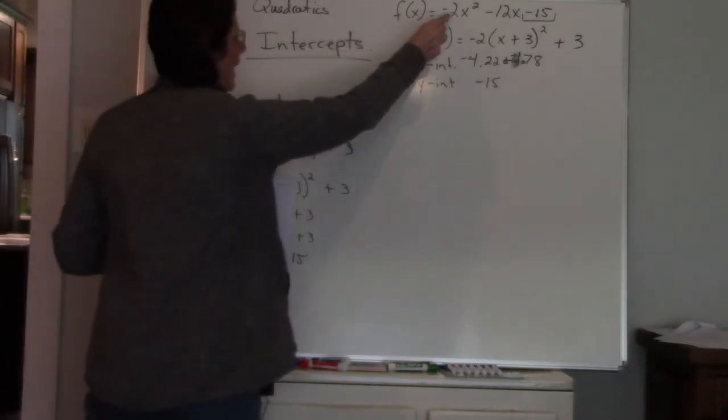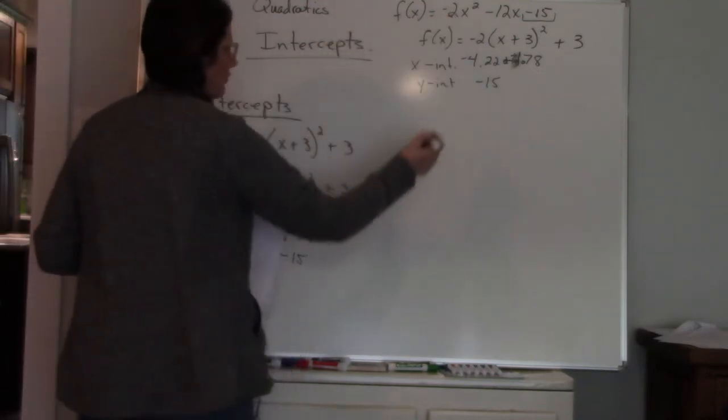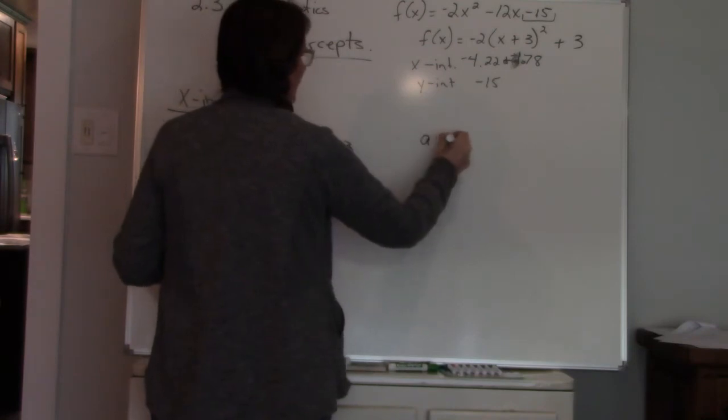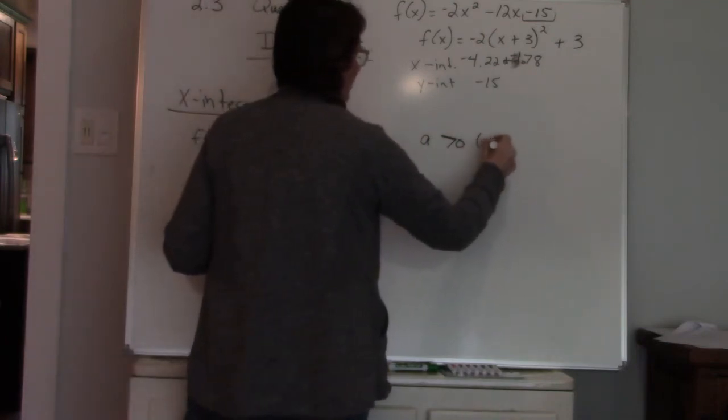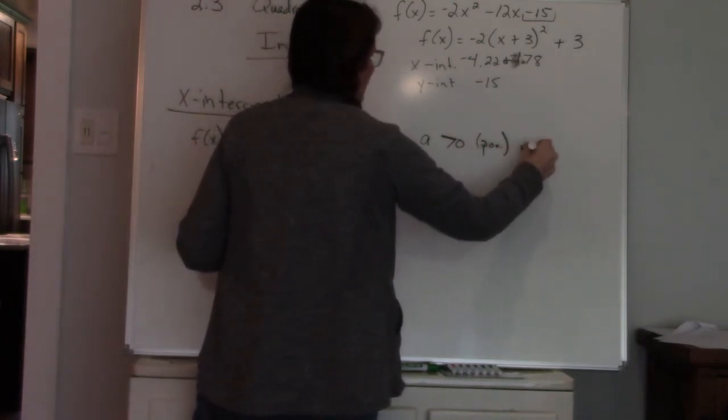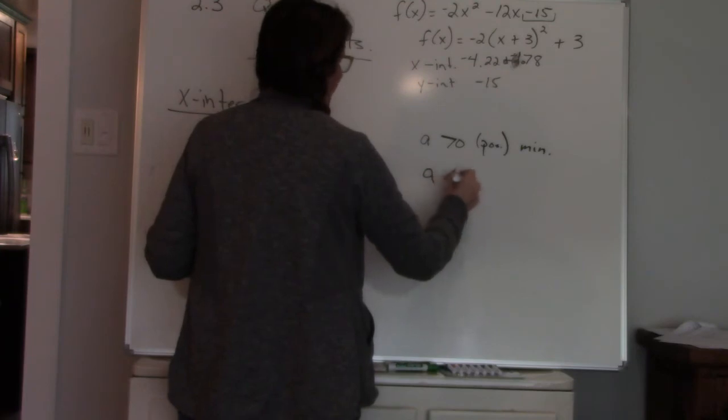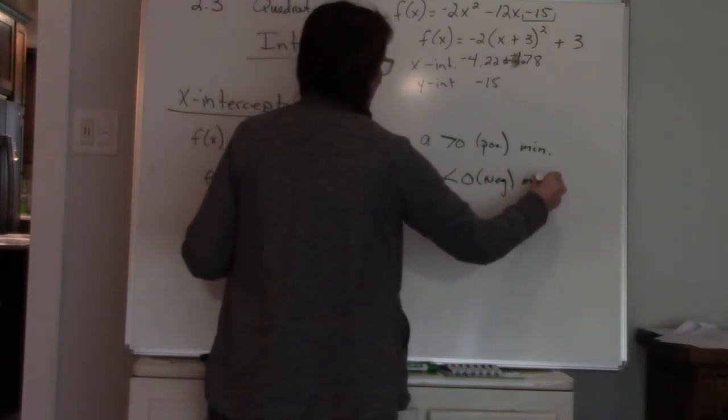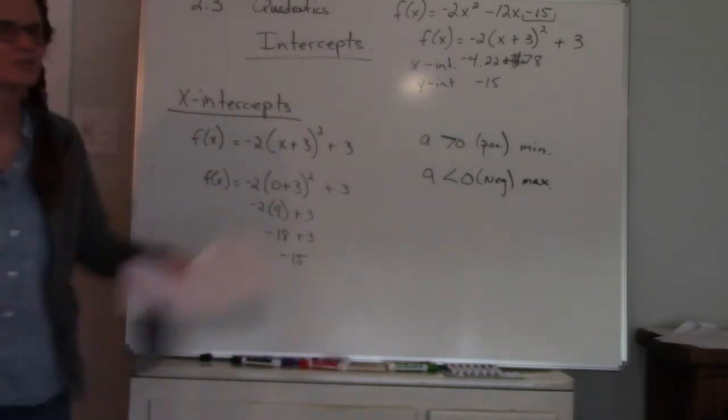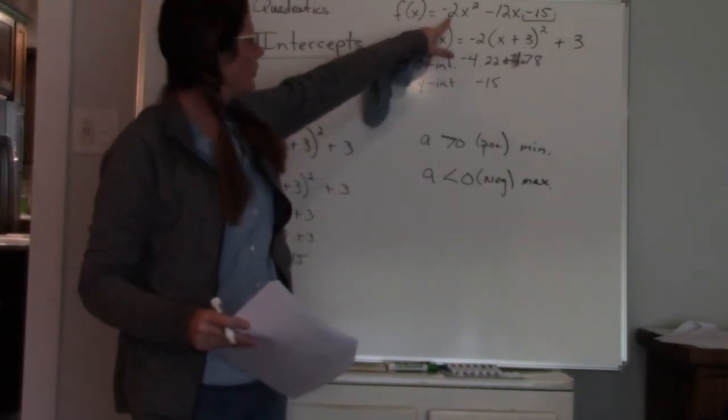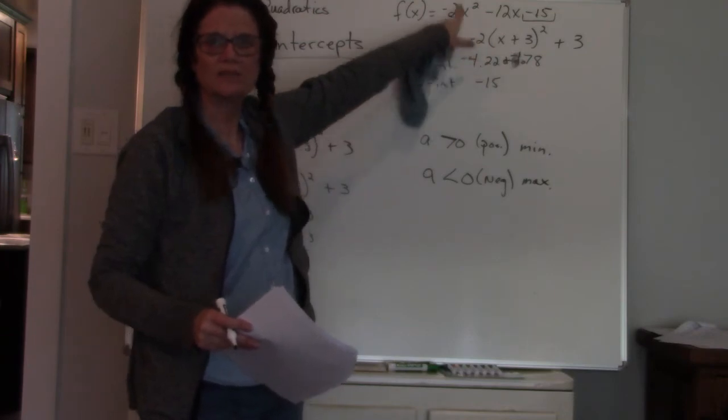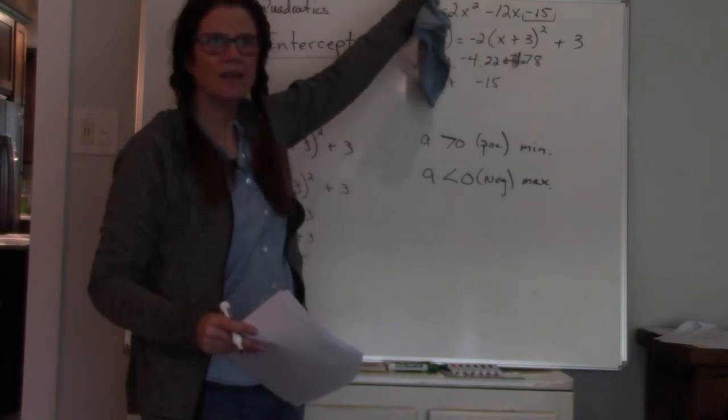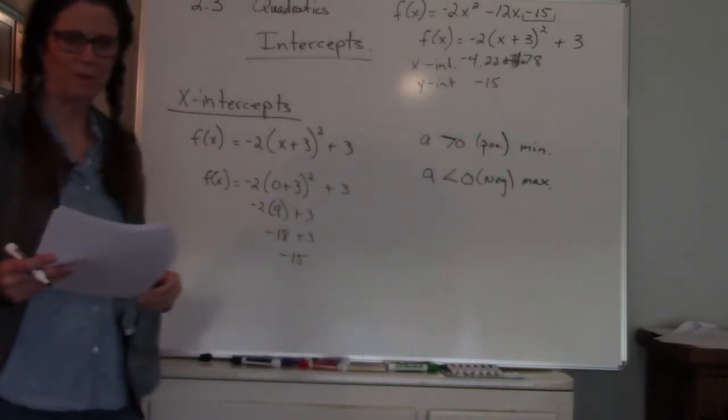We know this is going to be a max because our first value, the a value, when it is greater than 0 or positive, we have a minimum. When the a value is less than 0 or negative, we have a maximum. And that's how you know. Just look at the first term. And it's the same whether it's in standard form or vertex form. It's just if it's positive, you have a minimum. If it's negative, you have a maximum.